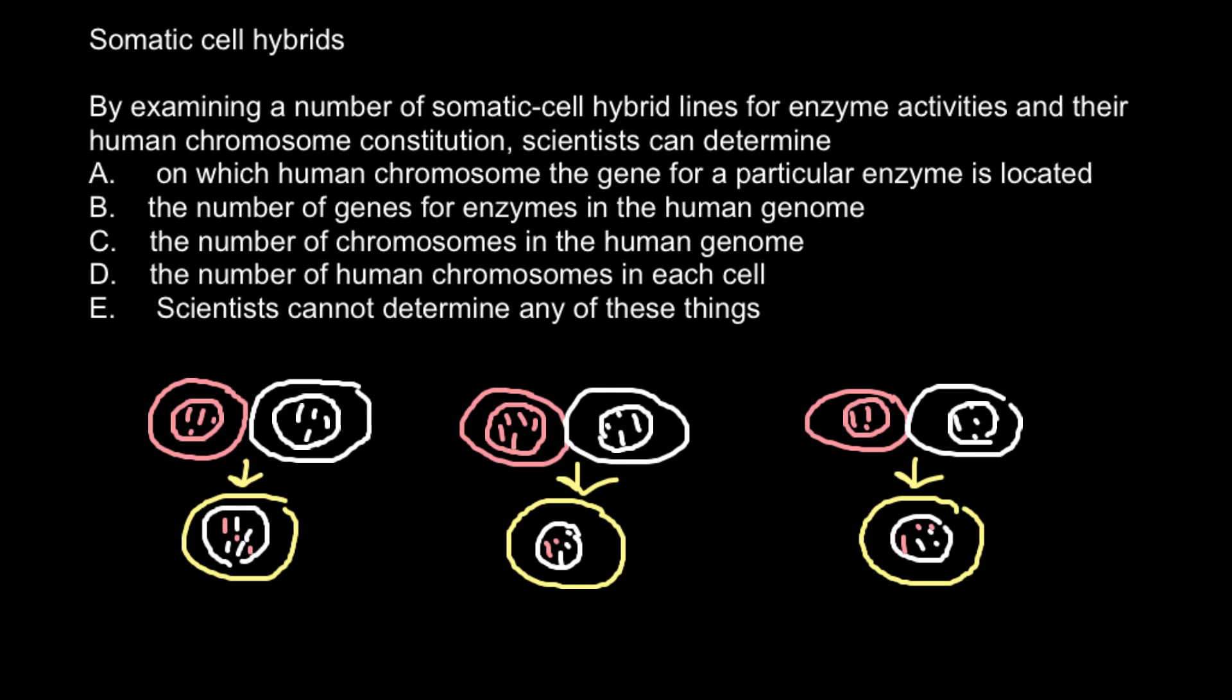Now imagine that we know that such genetic disorder as Tay-Sachs is caused by hexa enzyme, but we don't know on which human chromosome we can find this gene. And now when we hybridize this cell lines, we got information that here we have chromosome number 1, 15, and 18 left.